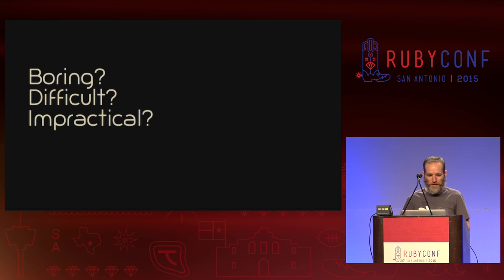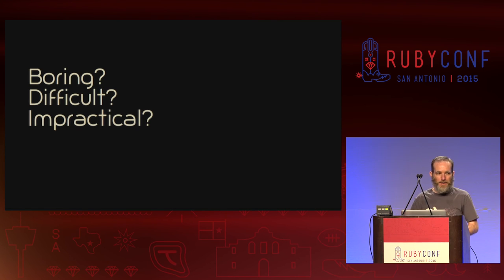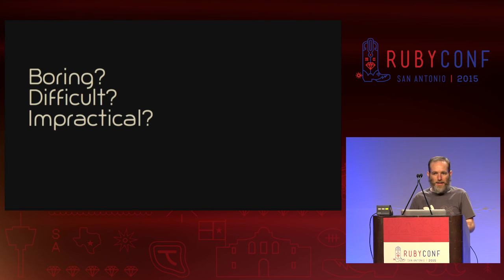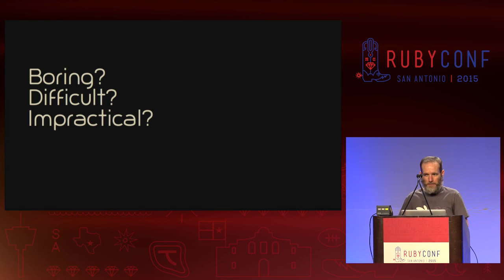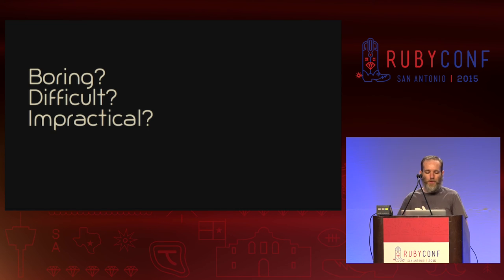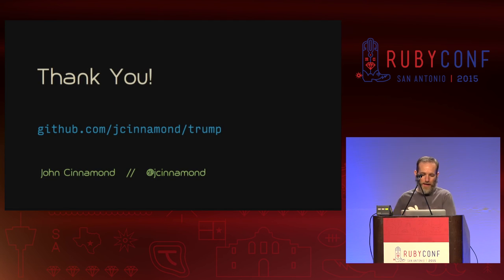I don't want to end on a negative note. The more important thing I've been trying to get across is that type theory and Ruby go together. Type theory is something we can engage with as Rubyists — it can potentially improve our confidence that our programs are correct and will behave as expected. So is type theory boring, difficult, and impractical? That's for you to answer. I hope at least some of you have found it interesting and more accessible than you previously thought. If even one person here goes away thinking 'I'm going to explore this further,' I'll count this talk as a success. All the code is available on GitHub.